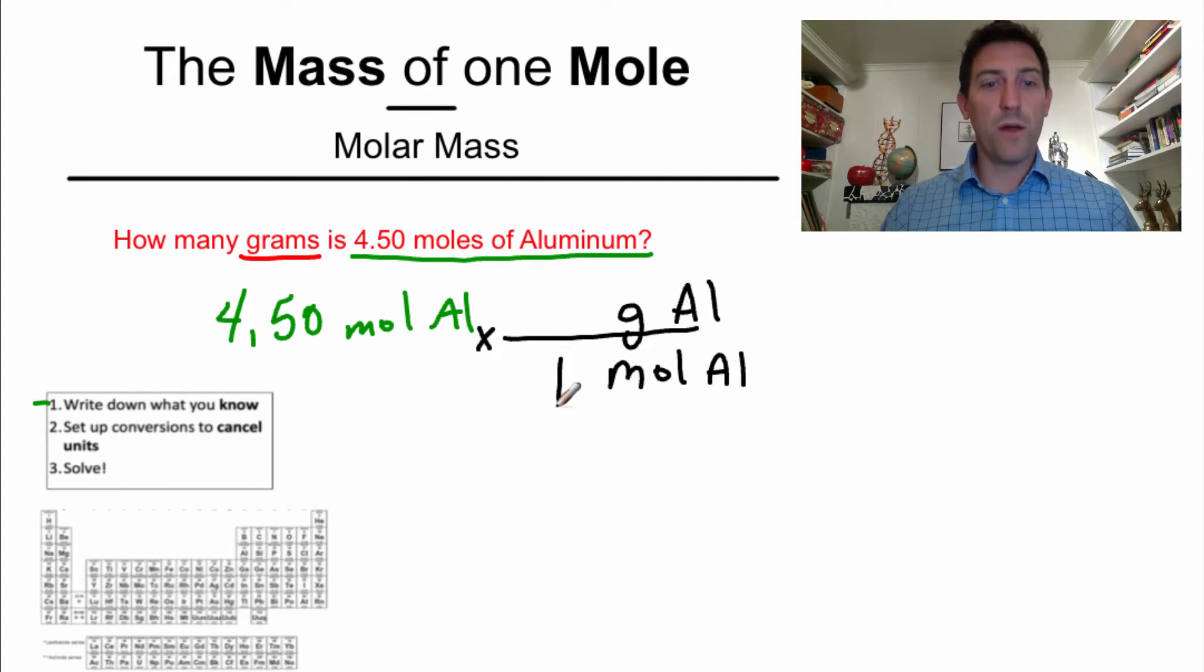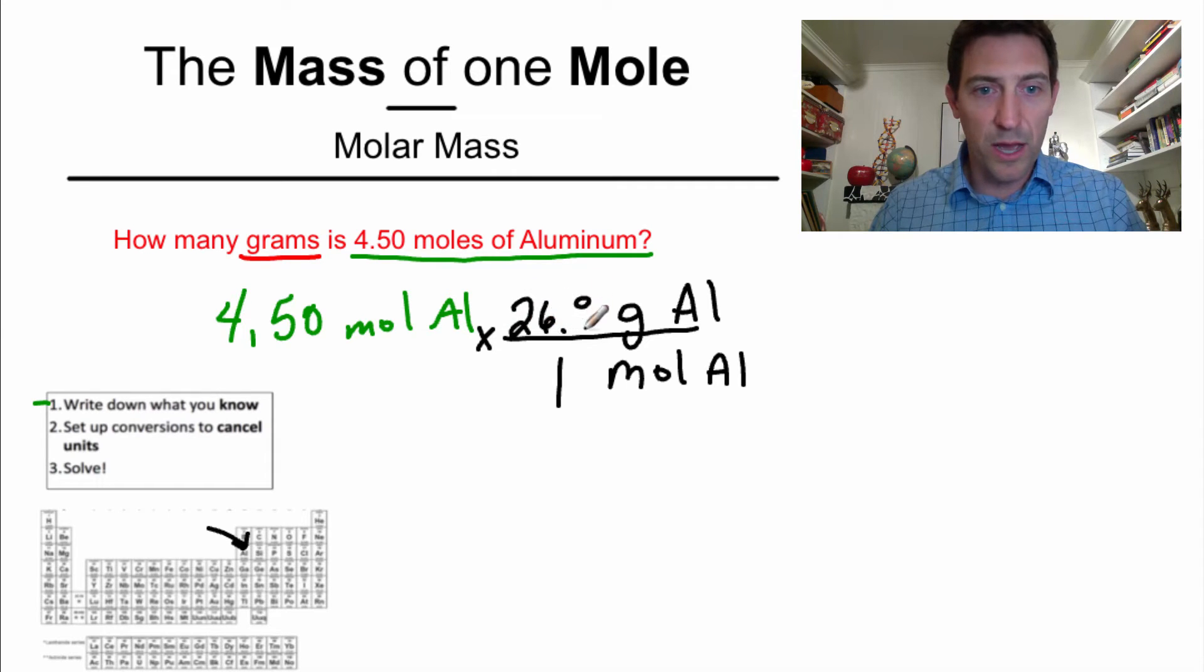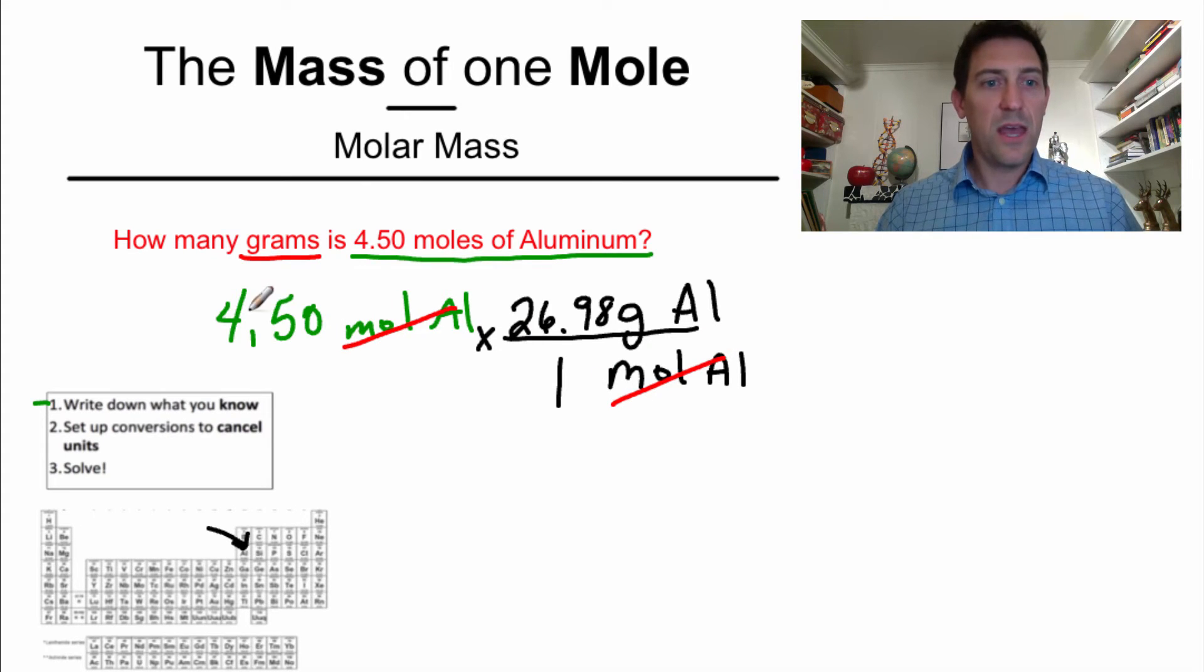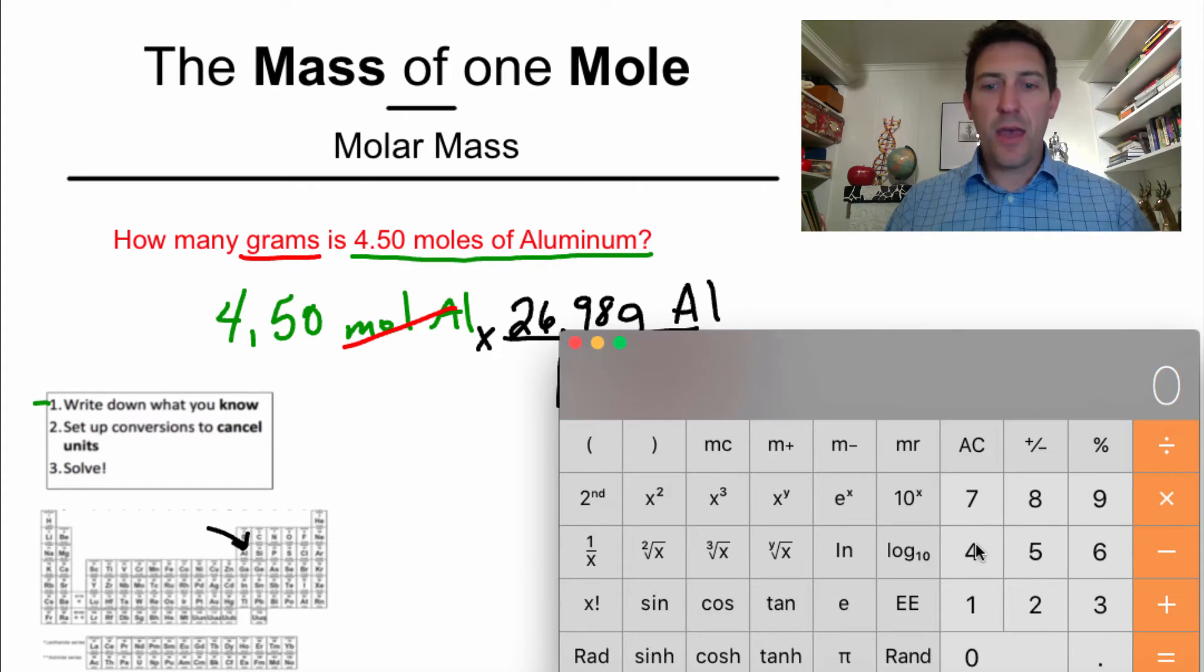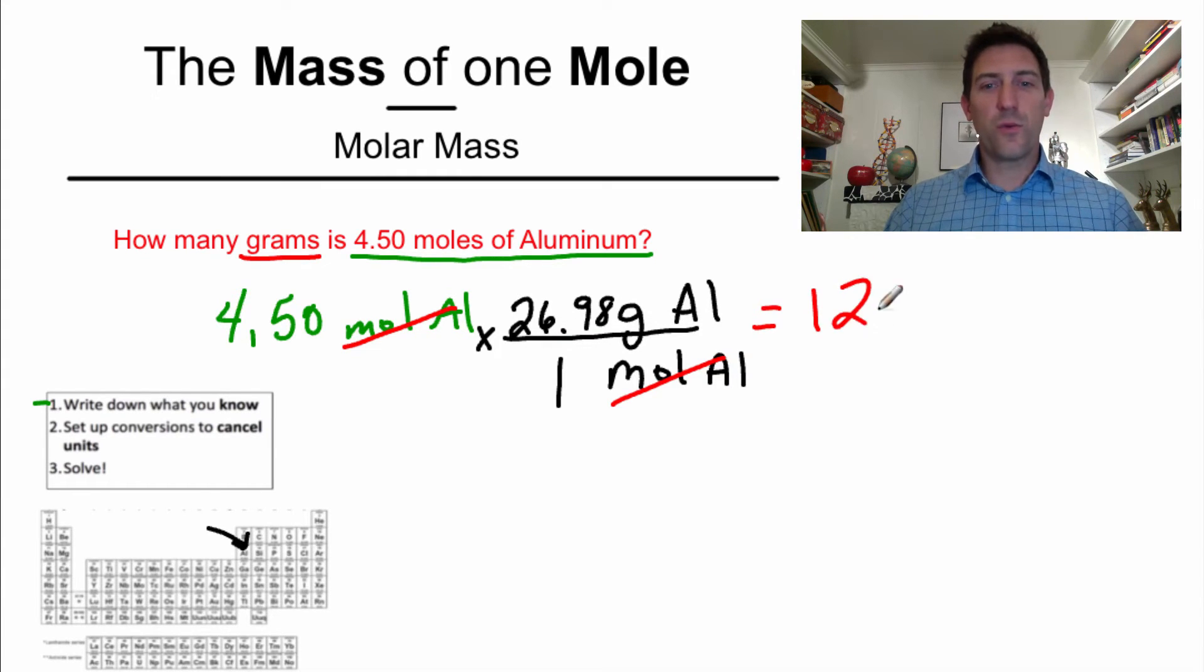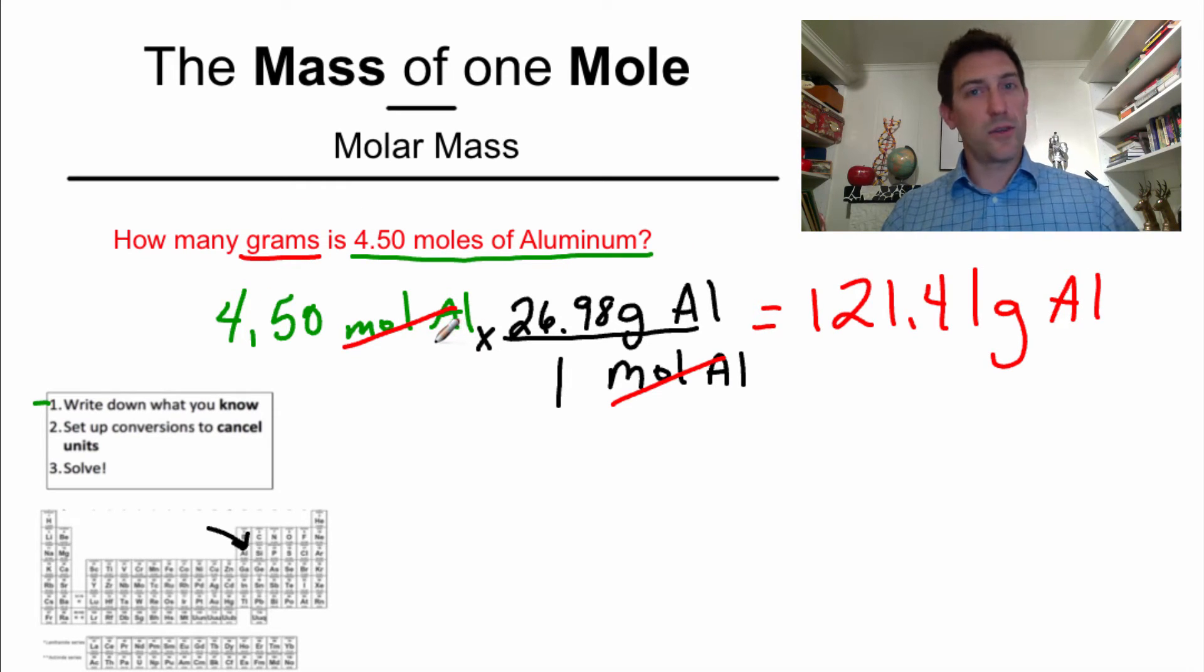So the mass of one mole of aluminum, we already looked it up on the periodic table a little earlier, is right here. It's 26.98 grams. Now these are going to cancel, cancel, cancel, and I get out my trusty calculator. I type in 4.50 times 26.98. Enter. That is 121.41. And I only have one unit left here. That's grams of aluminum. And it turns out that's what I wanted my answer in anyway. So here we go.